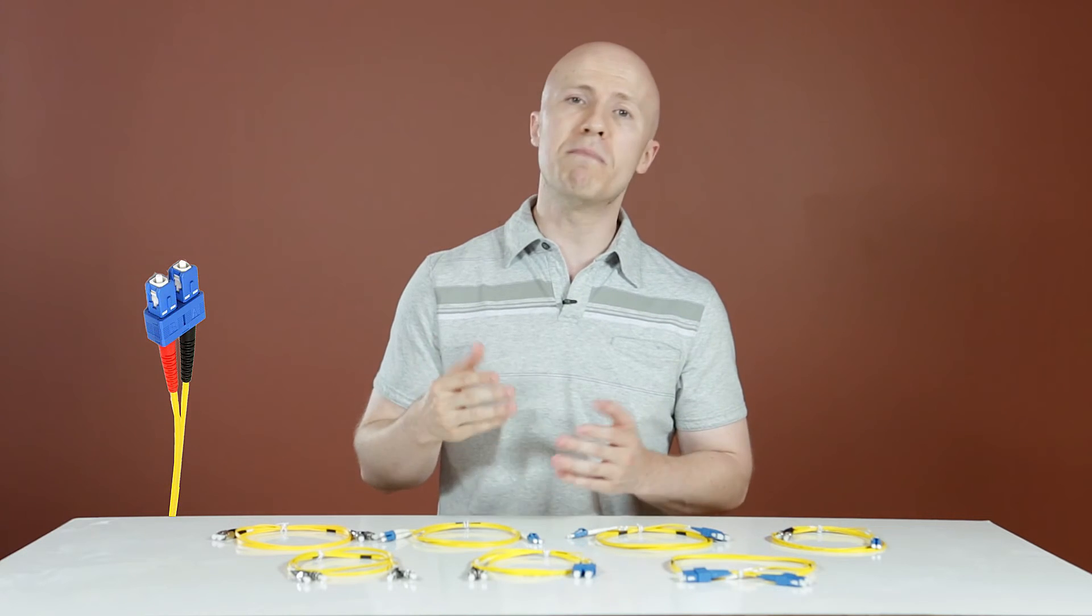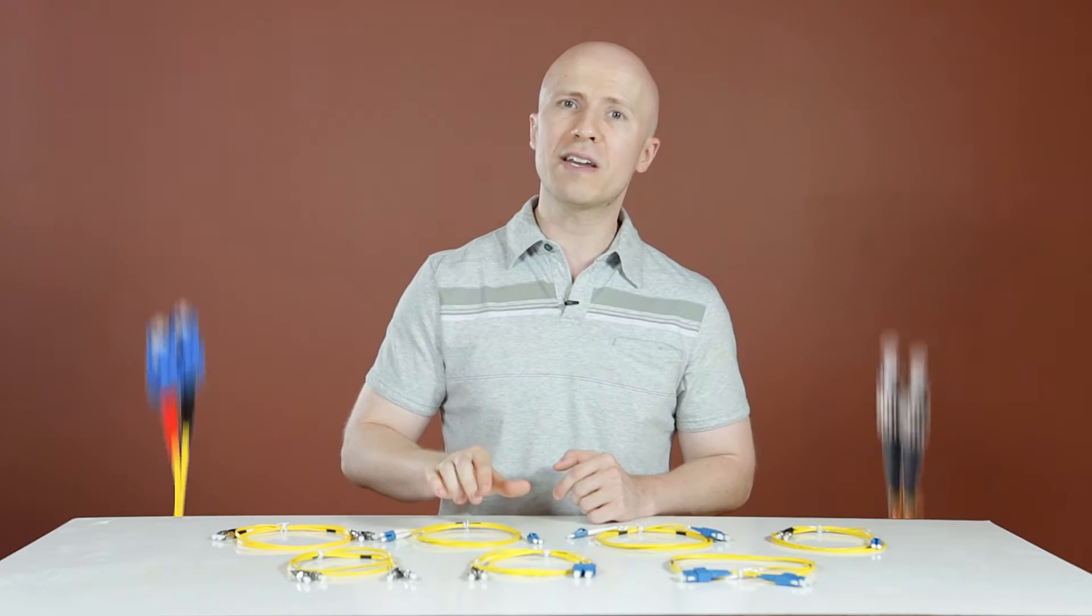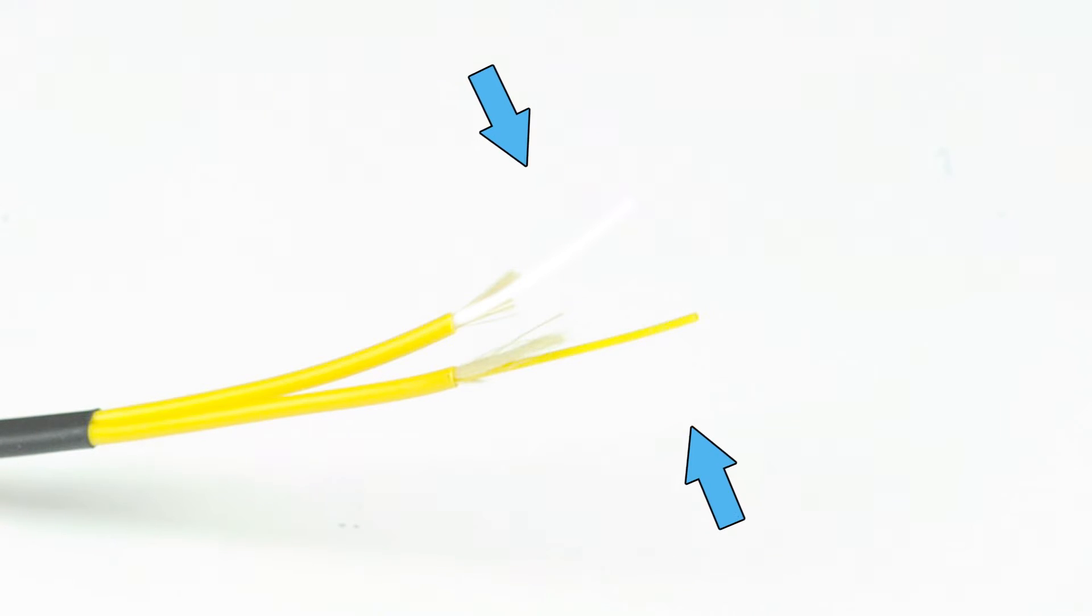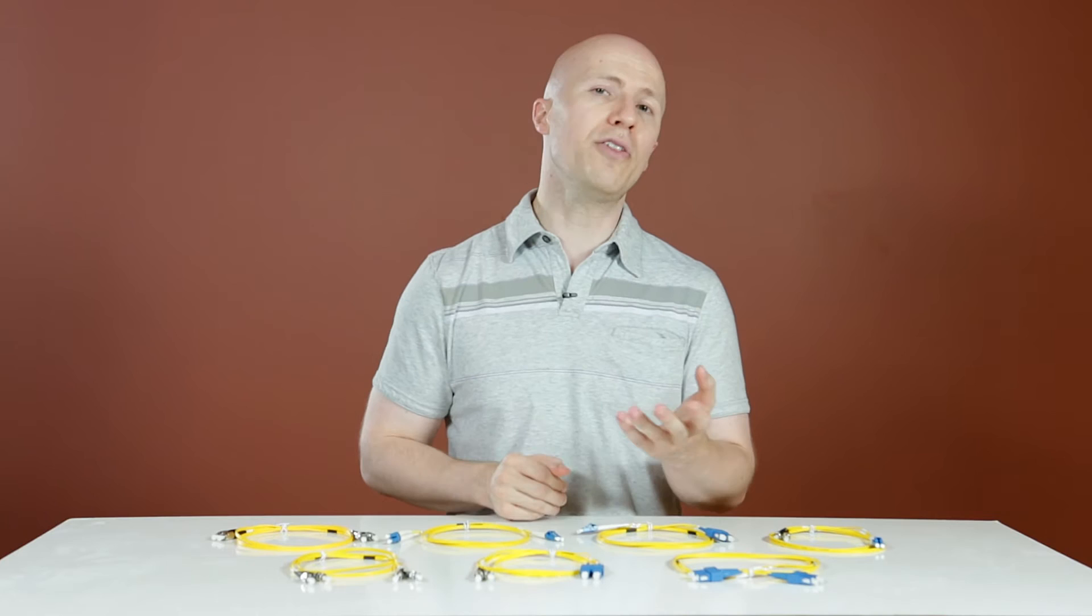They can easily be identified by their yellow jackets. With its small core, single-mode cables are virtually immune to electrical interference. This makes single-mode cables the ideal fiber cable for ISPs and other high-speed carriers that need to provide connectivity over long distances.